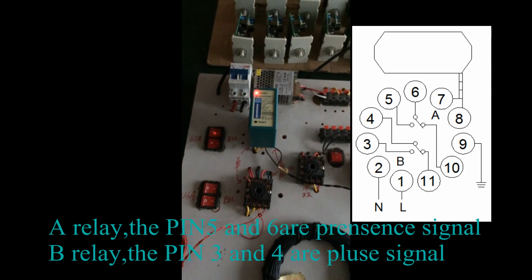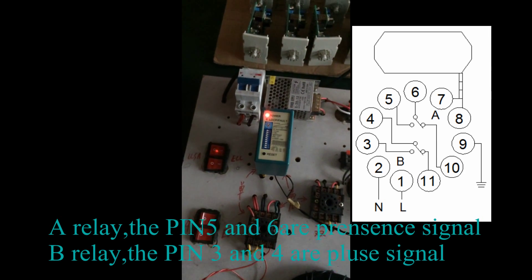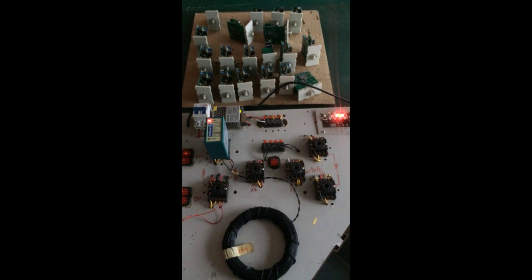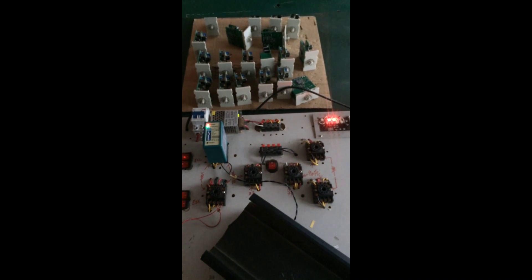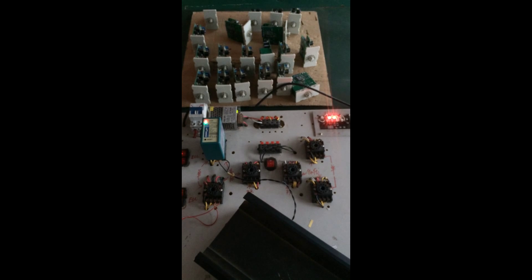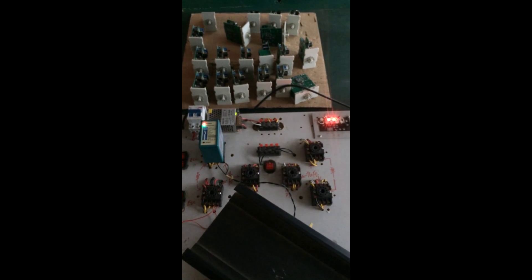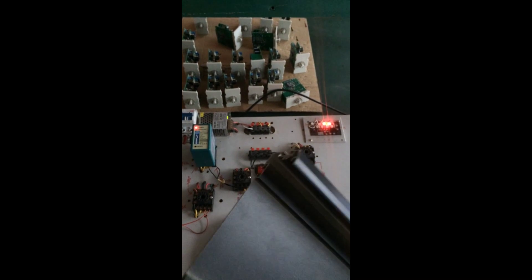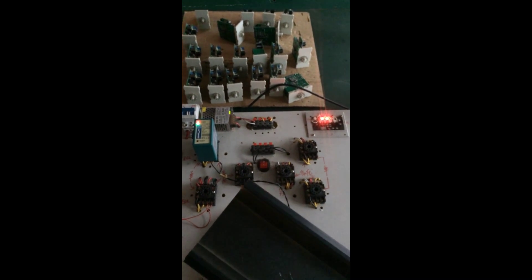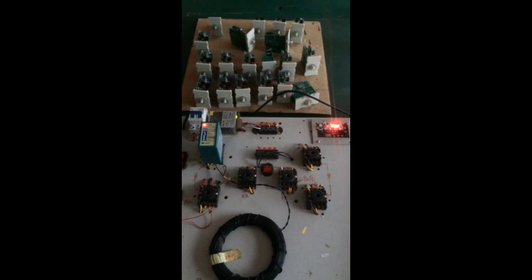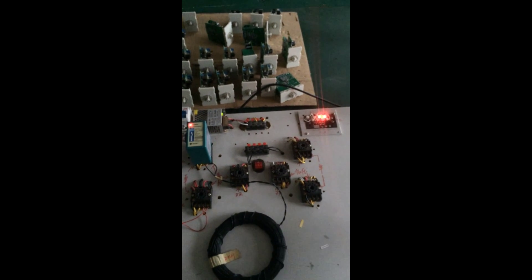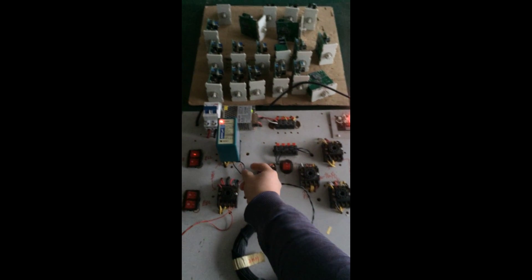If you want to use our single channel loop detector for traffic control, how to set switches three and four? After setting, press reset. When the car is on the loop, you get just the pulse signal.